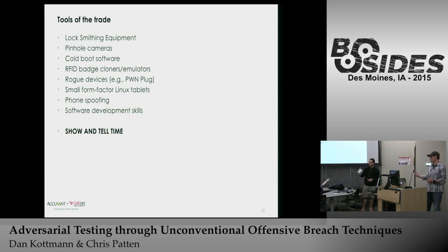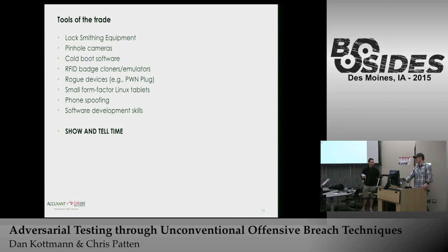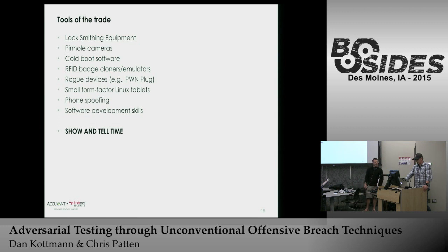That's a Pwn Plug — it's running a full version of Linux with Metasploit on it. You can build your own for about $150. You just plug it into the network; it looks like a power device. Plug it into power and a network jack, and it establishes a backdoor VPN connection back to our labs.